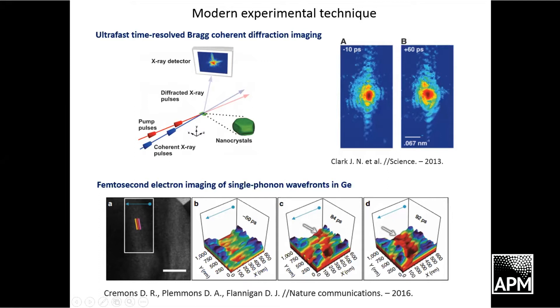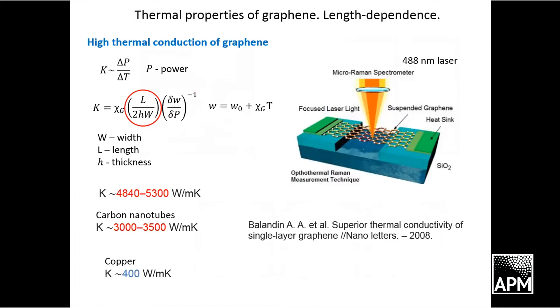Modern experimental techniques could be used to observe images of heat in many materials, even at finite temperature. Considering graphene, it was shown by experimental devices that it has very high thermal conductivity, much higher than for usual metals like copper. But what is more to be mentioned is that it is length dependent.